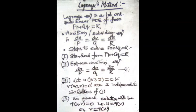Basically, we follow four steps. Step one: express the given equation in the standard form pp + qq = R. Step two: express the Lagrange equation in its auxiliary form, that is, write the auxiliary equation dx/P = dy/Q = dz/R — let us call this equation (1).